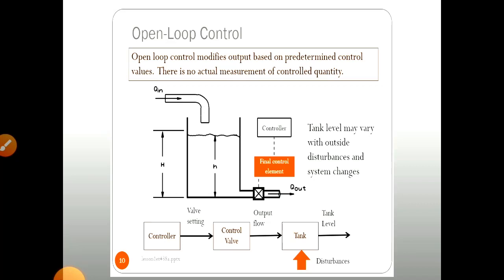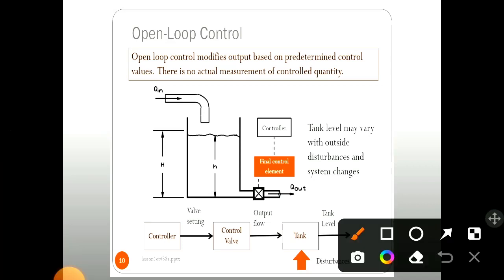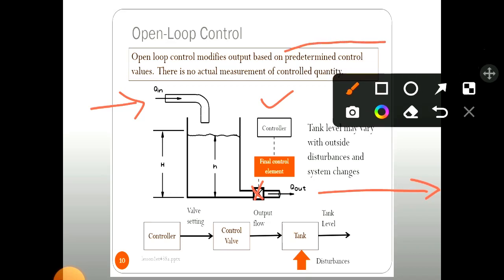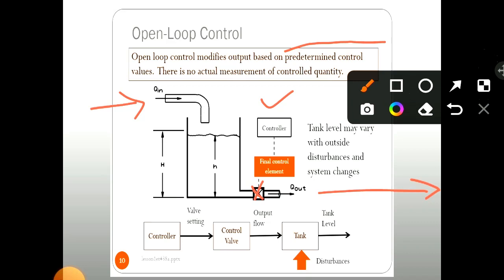Now there is one tank shown having height H. Here Q input is nothing but fluid flowing inside this tank, and Q output is fluid coming out through this tank. Here a control element, final control element, and controller are shown. This is the control valve. In this Open Loop System, we have predetermined control values — the setting of this control valve is done predetermined.